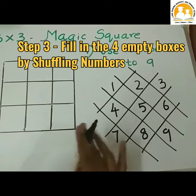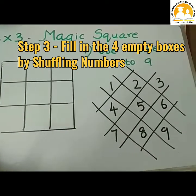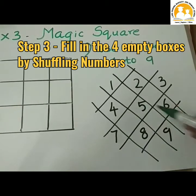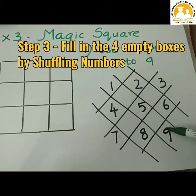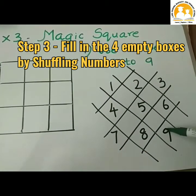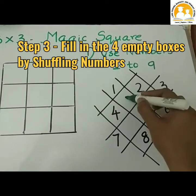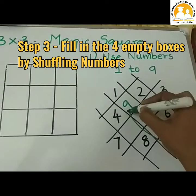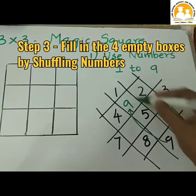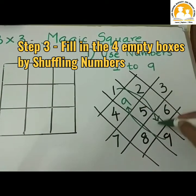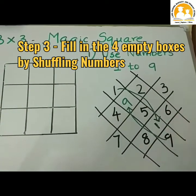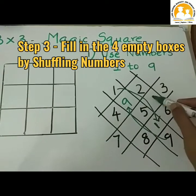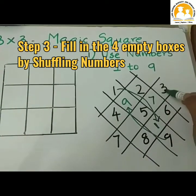Step 3 is to fill in the empty boxes in between. 9 comes here, 1 comes here. 7 and 3 are shuffled — 7 is here and 3 is here.